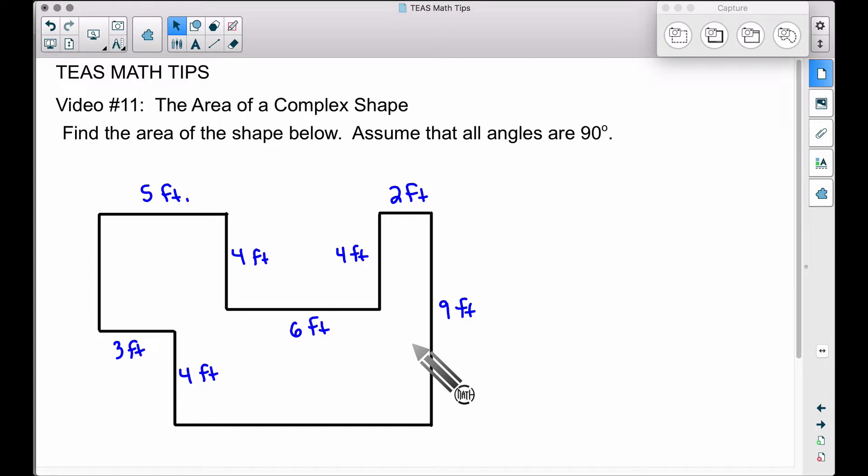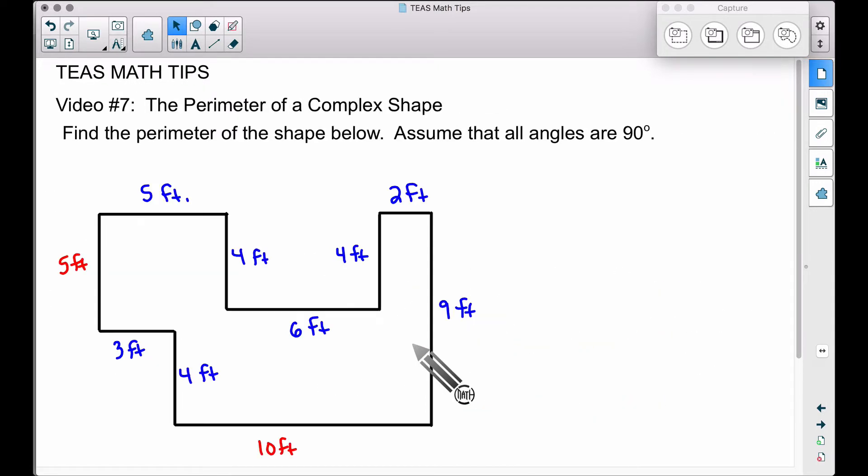Let's rewind back to T's Math Tips number seven. Video number seven, we found the perimeter of this complex shape, and you may notice that we have a red 5 foot and a red 10 foot here. We found those in that video. I encourage you to check out that video to figure out how we got this 5 and how we got this 10.